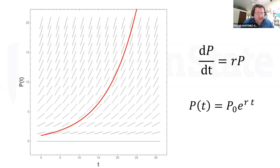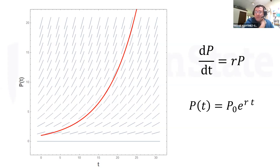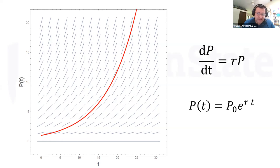The function P(t) has p-sub-zero, which is just the initial population, times the exponential function raised to power r times t. As t increases, the population increases corresponding to the appropriate propagation rate. If the value of r is bigger, all these slopes are going to be steeper and the graph grows a lot faster. If the initial population is larger, the graph begins higher on the left.